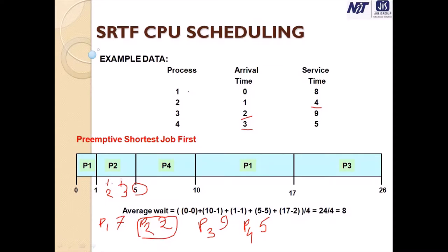At 5 milliseconds, P2 has finished. Among the remaining processes: P1 has remaining time 7, P3 has remaining time 9, P4 has remaining time 5. P4 is shortest, so P4 starts execution from 5 to 10 milliseconds. At 10 milliseconds, we check remaining burst times: P3 remaining = 9, P1 remaining = 7. P1 is shorter, so P1 executes from 10 to 17 milliseconds and finishes. Then P3 is the only process left, so P3 starts its execution.